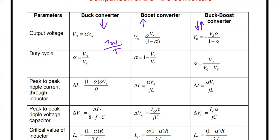For the boost converter, the output voltage equals input voltage divided by (1 minus α). For the buck-boost converter: if the duty cycle α is less than 0.5, it behaves like a buck converter; if α is greater than 0.5, it behaves like a boost converter.